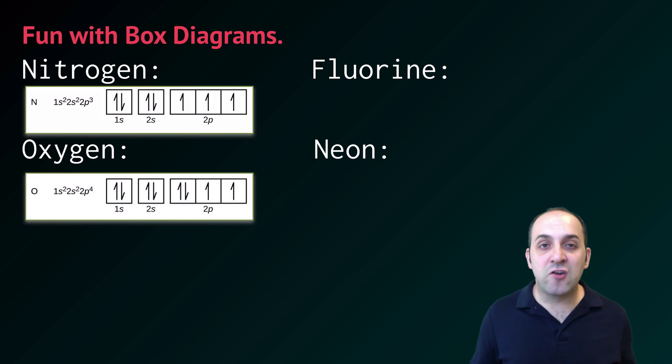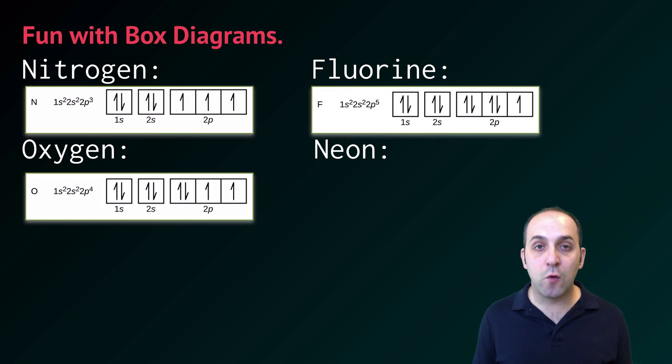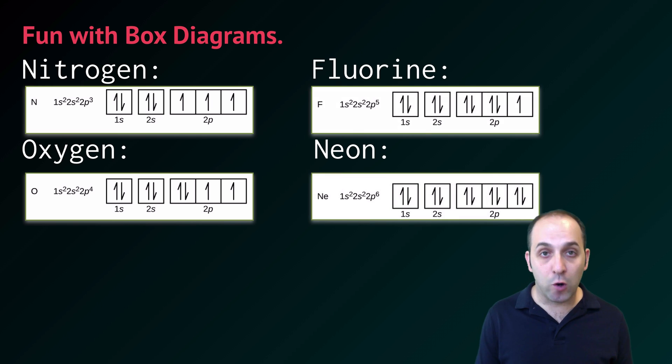The next would be oxygen, and since oxygen represents our first paired electron, we're going to put that electron as a down-pointing arrow in the leftmost box in the p sublevel. Fluorine is going to have two pairs of electrons, the leftmost and the center box, and then neon is going to have every orbital filled in the first two principal energy levels.